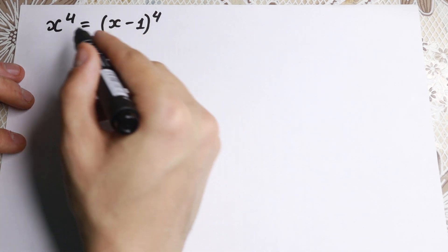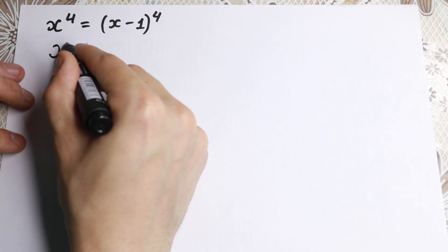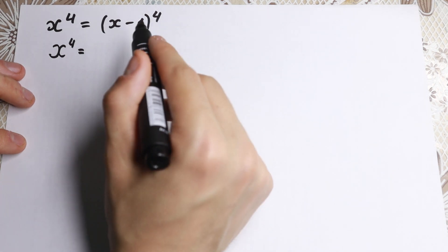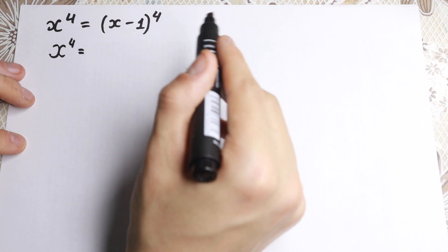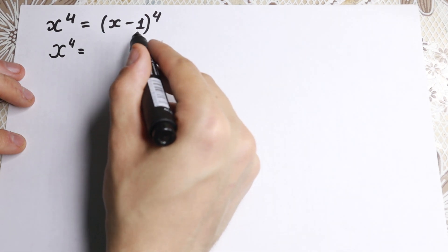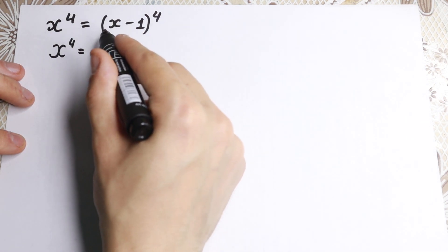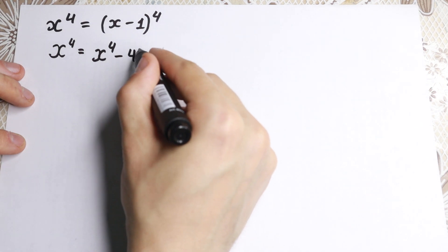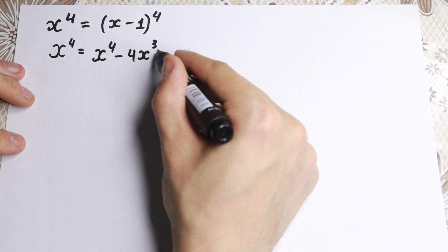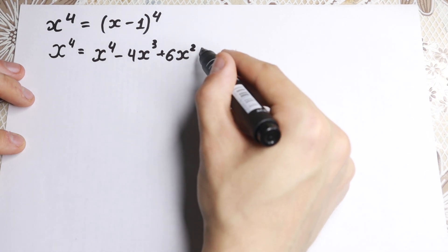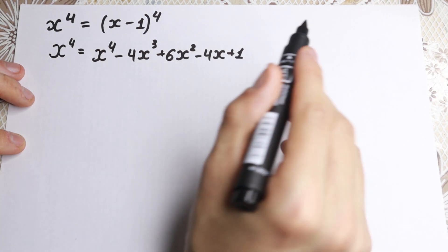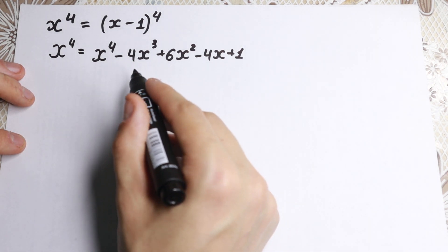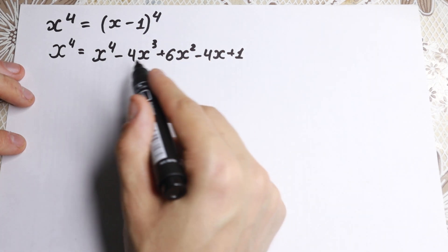We have x to the fourth on the left, equal to x minus one to the fourth on the right. We expand using the binomial theorem: x minus one to the fourth equals x to the fourth minus 4x cubed plus 6x squared minus 4x plus 1. This is the binomial theorem — not a hard theorem to learn.